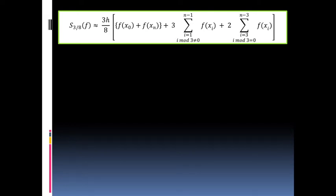Going back to the equation, take a look at it. You will see here i mod 3 is not equal to 0, and also you will see here i mod 3 is equal to 0. What are these equations? Modulus, or mod, is actually an operation wherein the result is the remainder.